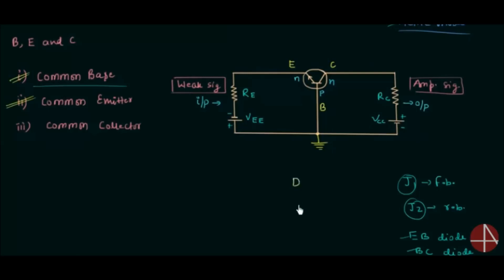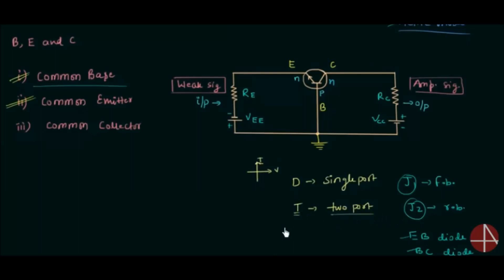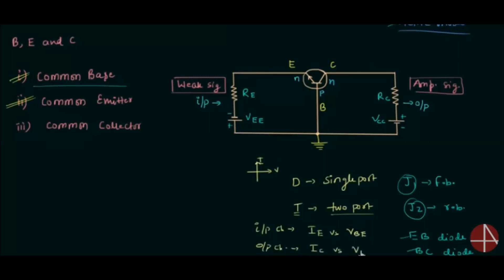If I compare diode and transistor: a diode is a single port device and a transistor is a two port device. In case of a diode we have simple VI characteristics, but in case of two port devices like transistors we have input and output characteristics. In case of input characteristics we have a plot between the input current — the input current in this circuit is IE — and the input voltage VBE. In case of output characteristics we have a plot between the output current IC and the output voltage VCB.